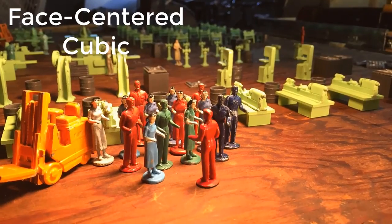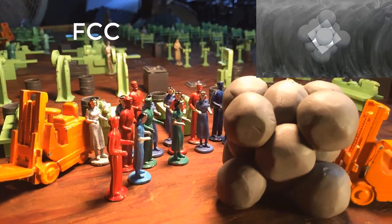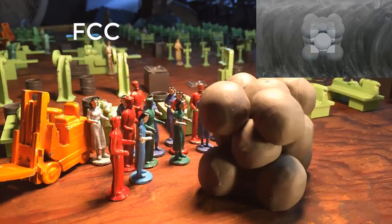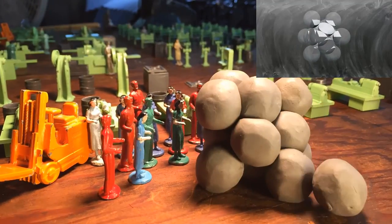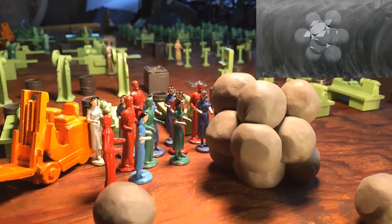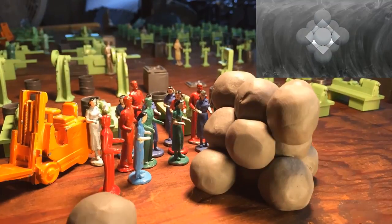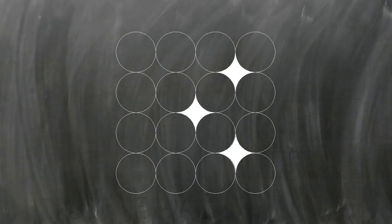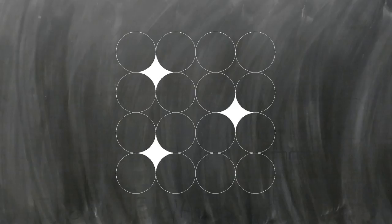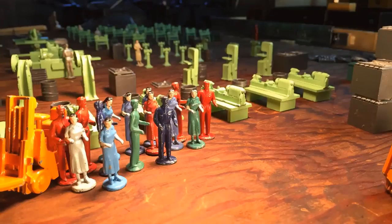Another common lattice structure is the face centered cubic, or FCC lattice. This structure also looks like a cube, but it has additional atoms at each of the six faces of the cube. When iron is heated up, it will change from a BCC to an FCC structure. If you think about the spaces between the atoms, you might think that would change if the crystal lattice structure changed — and you would be right, but we'll look at that later when we start talking about heat treating metals.